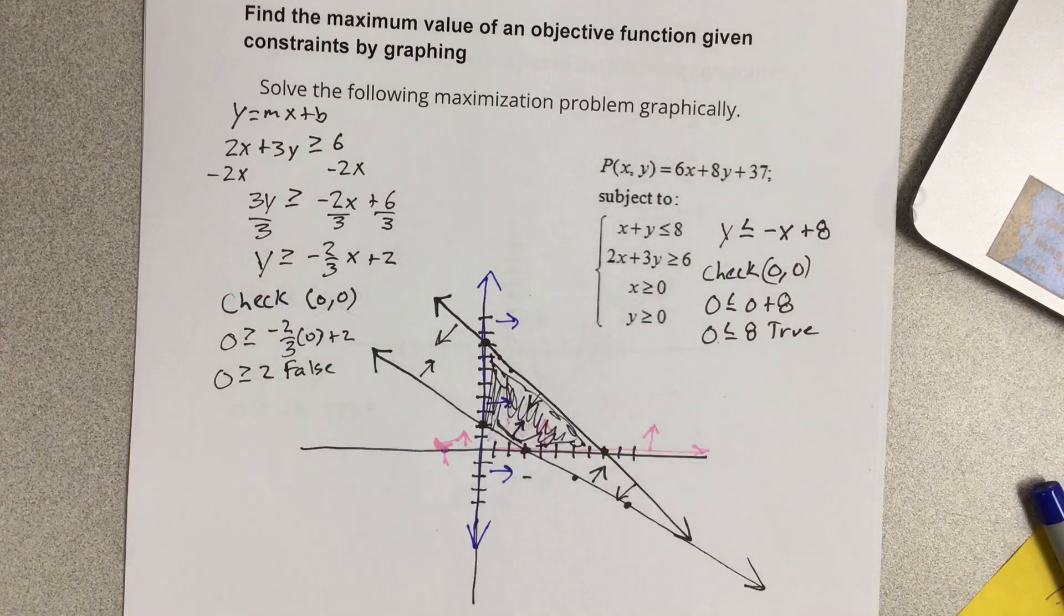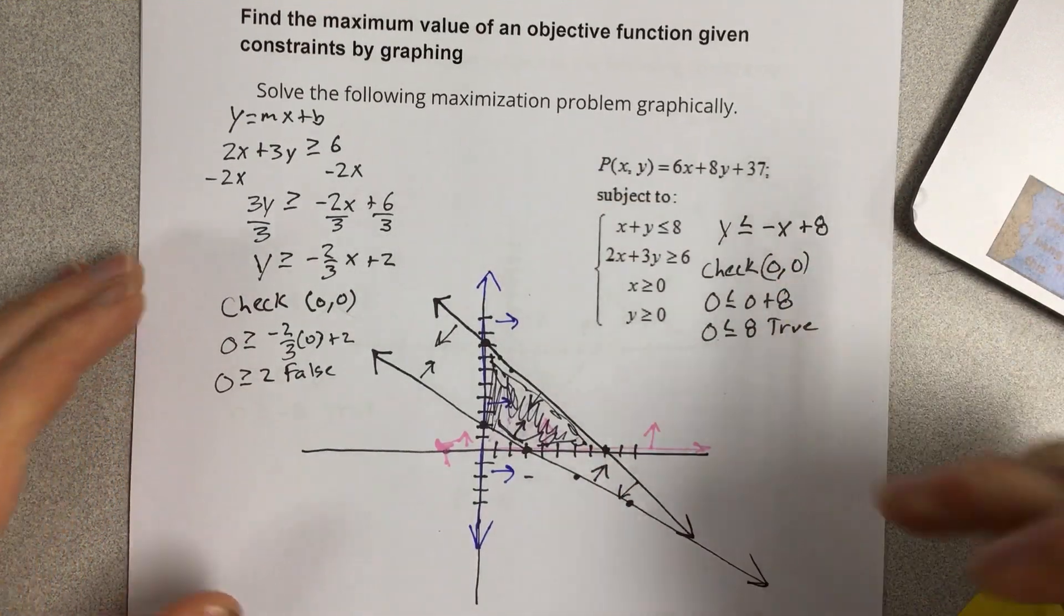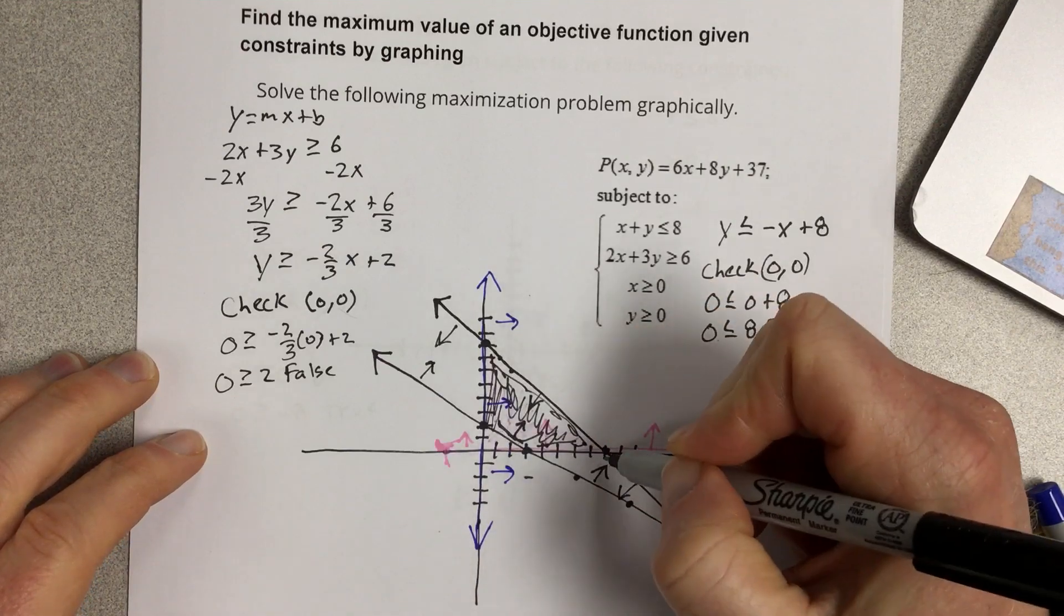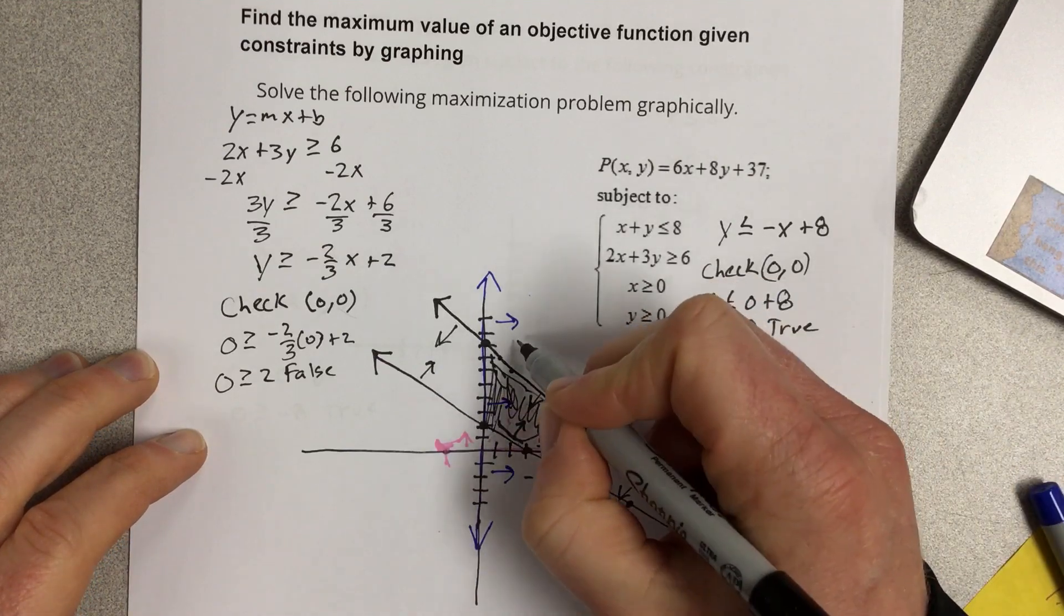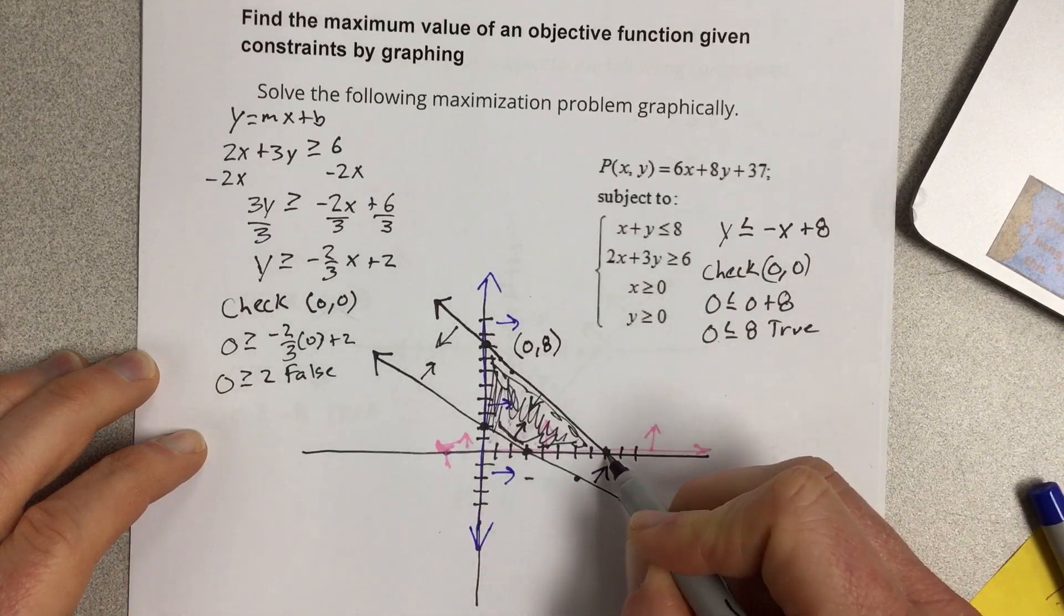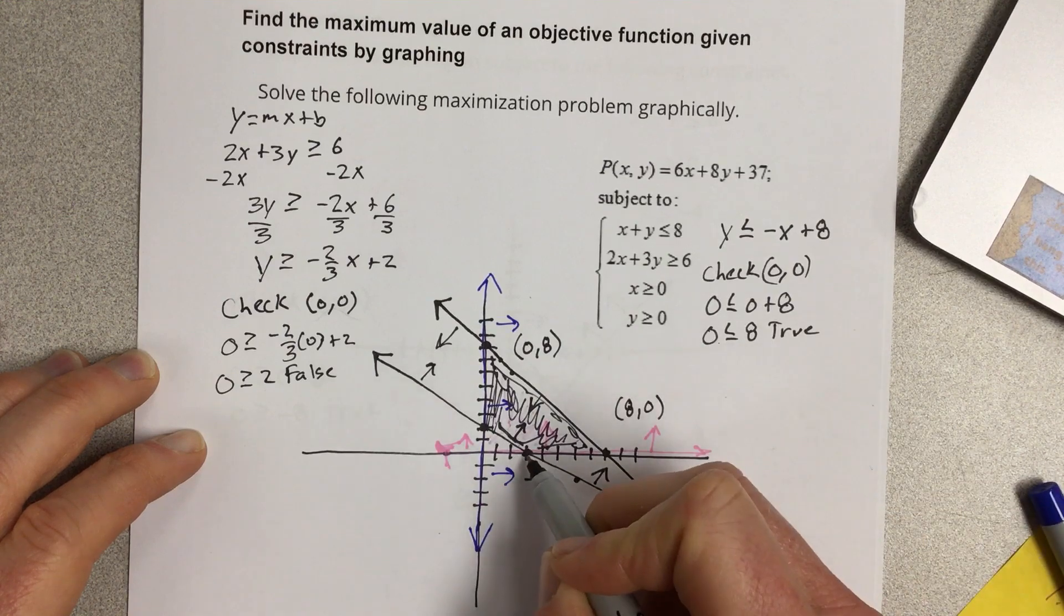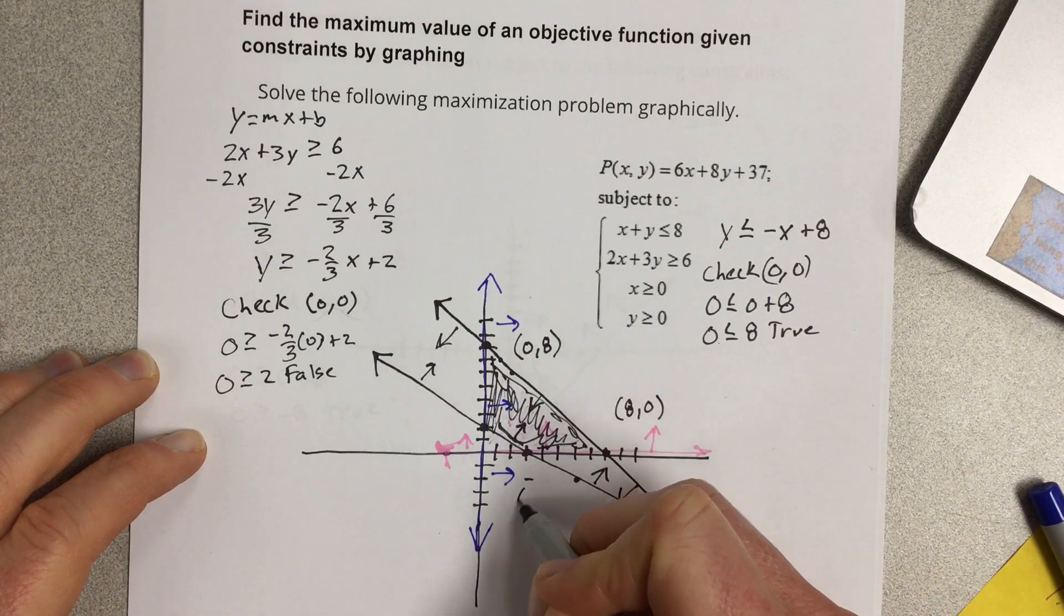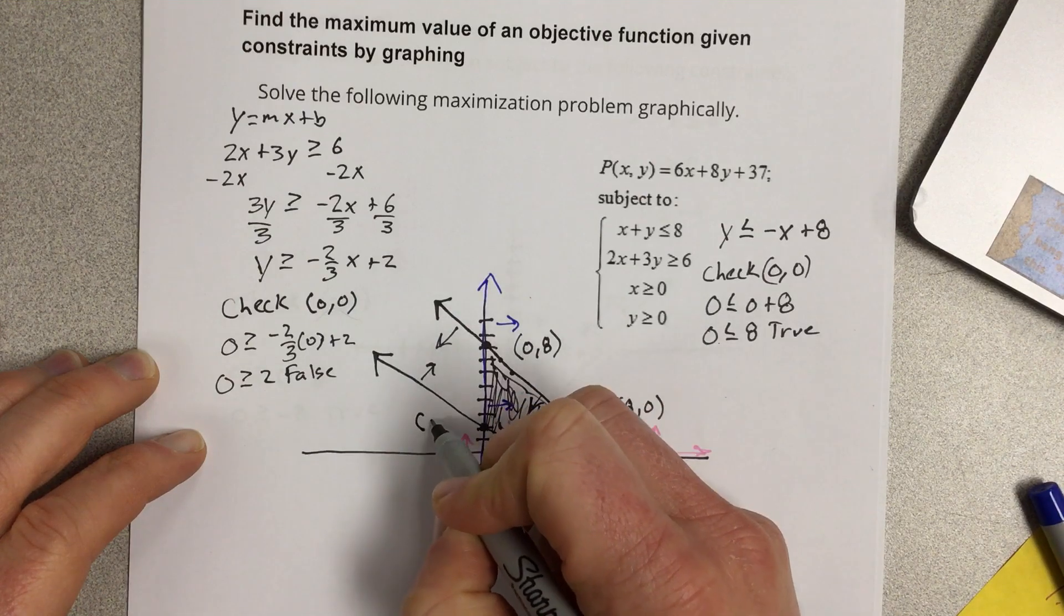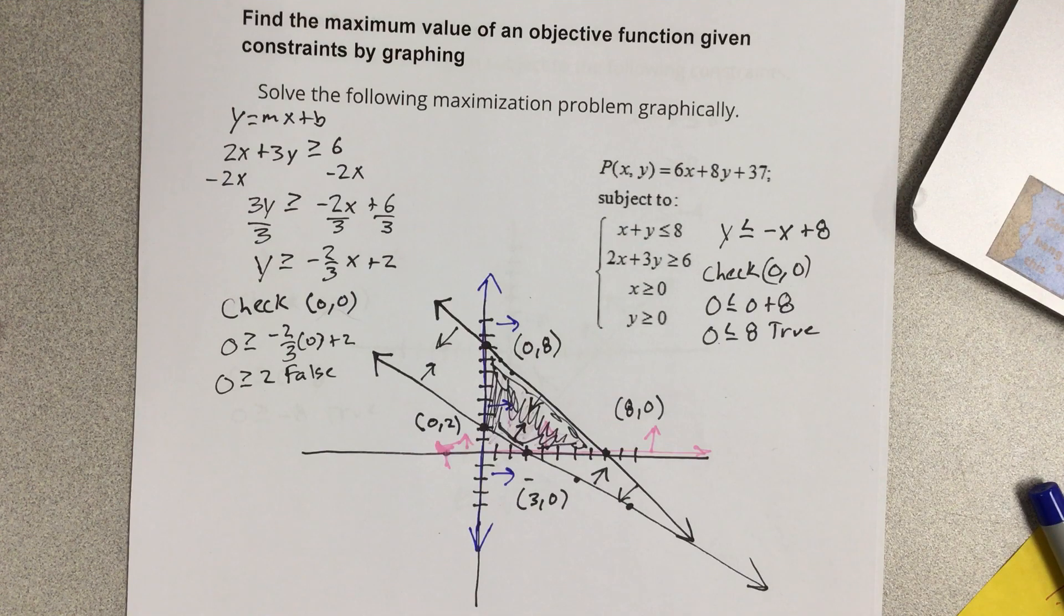Now we really have four possibilities for maximizing. We have all these intersection points here, we've got four of them. This coordinate is 0, 8. This coordinate is 8, 0. This coordinate here is 3, 0, and this one is 0, 2. So we have four choices for our maximum.